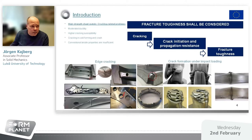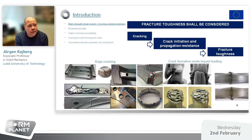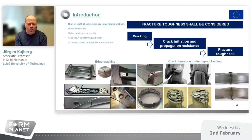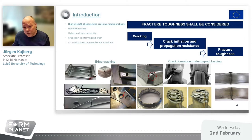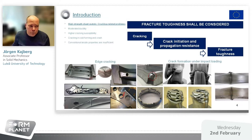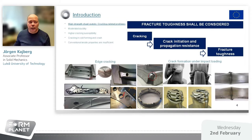Many high-strength steels have very attractive properties, but unfortunately some grades are associated with crack-related problems. Typically, new high-strength steels have besides a very high strength also fairly good ductility, but they are sometimes sensitive to cracking. Cracking can appear, for example, during cold forming, but it could also appear in a crash box under impact loading. What has been found is that conventional tensile properties are insufficient to describe the crack susceptibility of high strength steels. Therefore, the concept of fracture toughness is considered.